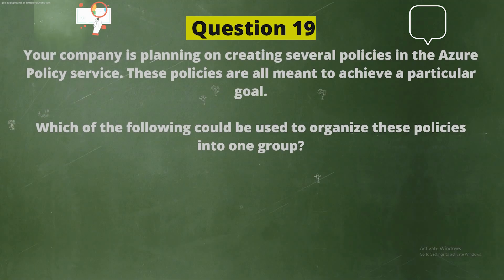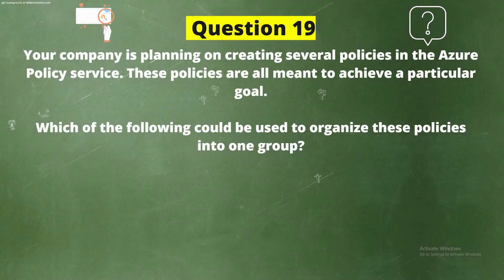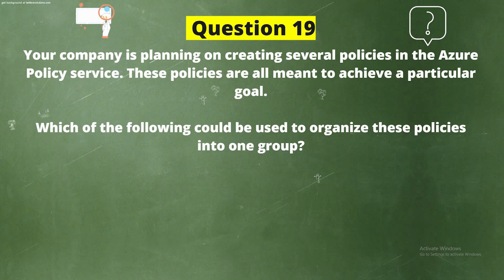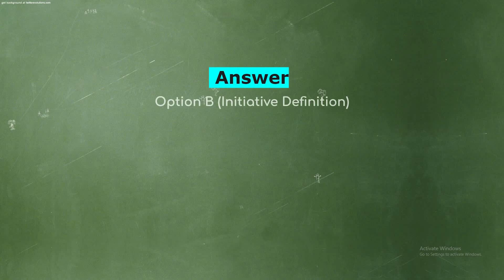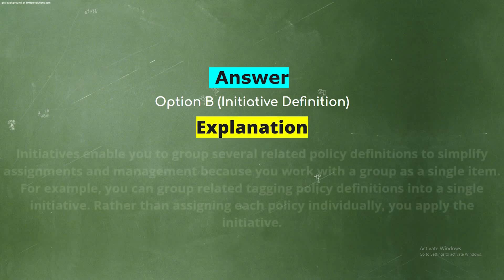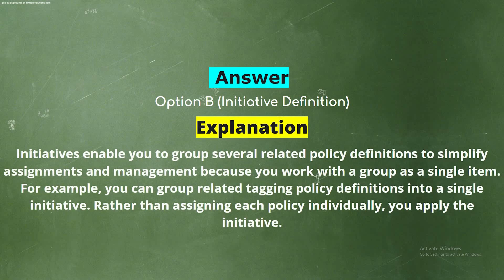Question 19. Your company is planning on creating several policies in the Azure Policy service. These policies are all meant to achieve a particular goal. Which of the following could be used to organize these policies into one group? Option A: Management Groups. Option B: Initiative Definition. Option C: Resource Groups. Option D: Subscriptions. The correct answer is Option B, Initiative Definition. Explanation: Initiatives enable you to group several related policy definitions to simplify assignments and management, because you work with a group as a single item. For example, you can group related tagging policy definitions into a single initiative rather than assigning each policy individually.